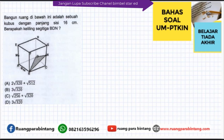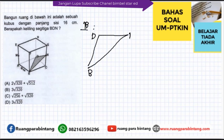Soal nomor 3: Bangun ruang di bawah ini adalah sebuah kubus dengan panjang rusuk 16. Berapakah keliling daripada segitiga BDN? Pilihannya: 2 akar 320 + akar 512; 3 kali akar 320; akar 256 + akar 320; 3 kali akar 320. Kalau kita perhatikan, BDN merupakan segitiga. Di sini titiknya adalah D, B, dan N. BD merupakan diagonal sisi, maka BD = 16 akar 2.